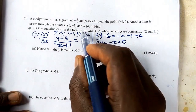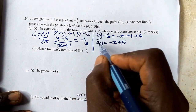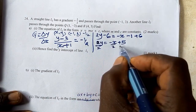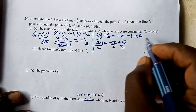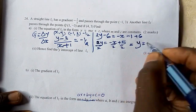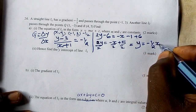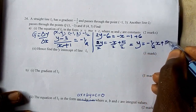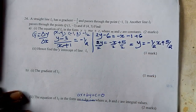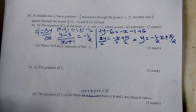We were told y equals mx plus c, so we want y to remain on the left side. We divide everything by 2. Our final equation is y equals negative one half x plus five over two. That is the final equation of Line 1.